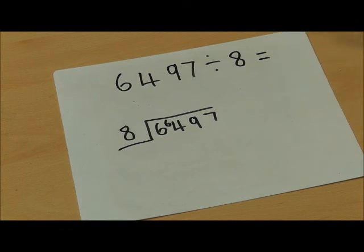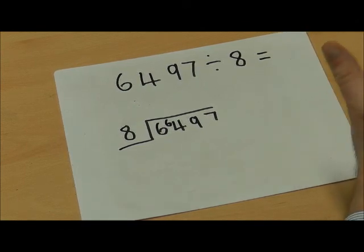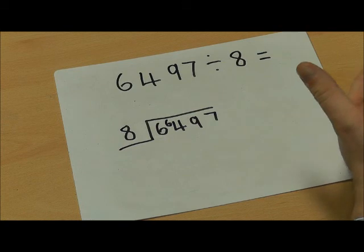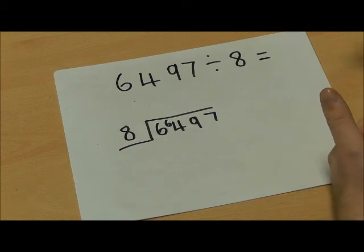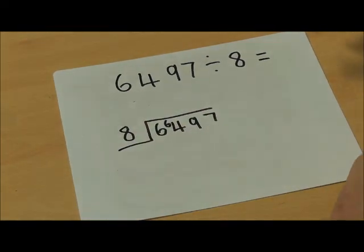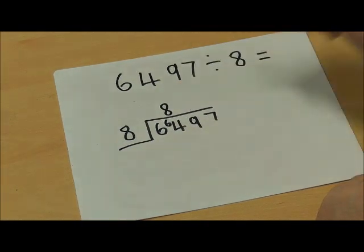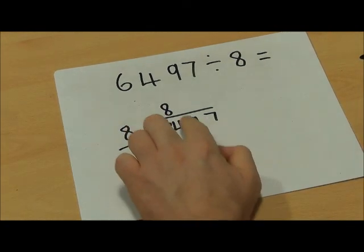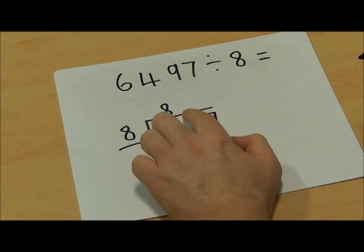So I'm going to use my knowledge of the 8 times tables. 8, 16, 24, 32, 40, 48, 56, 64. And I've counted on my fingers to show me that 8 goes into 64 8 times. Because that's gone in exactly, I don't need to carry any numbers over here.